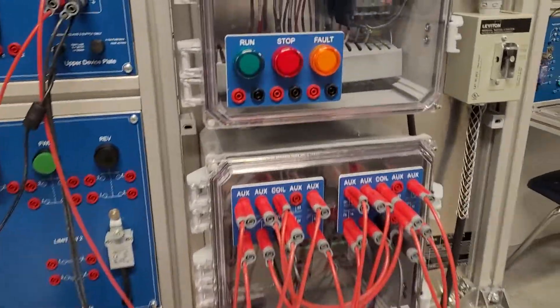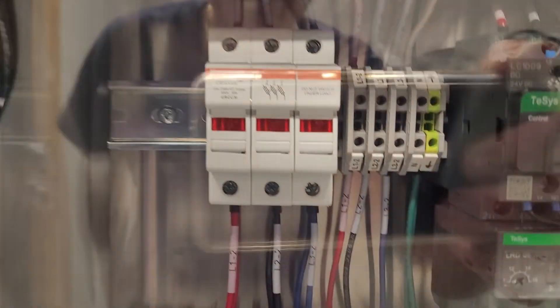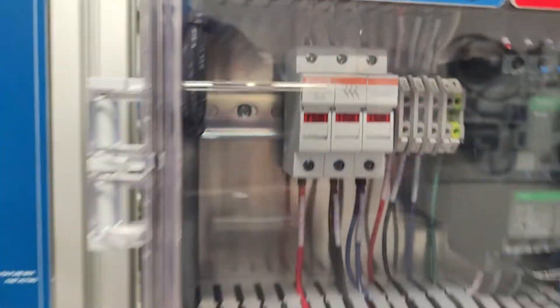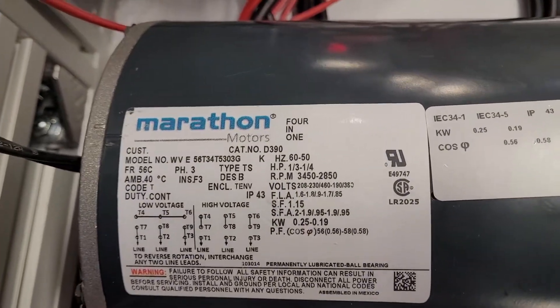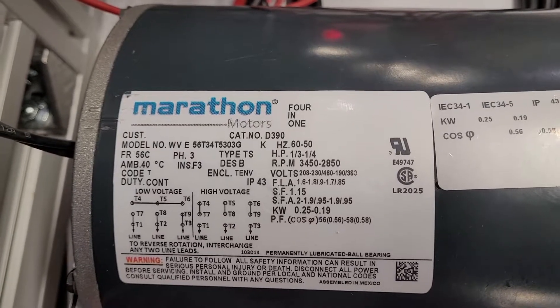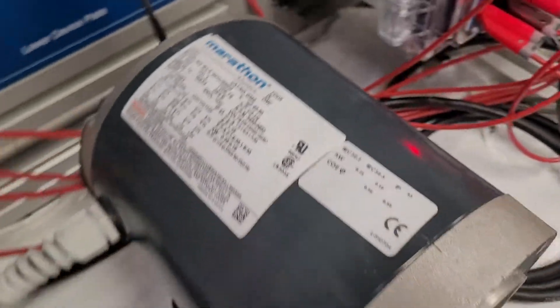I'm going to test 4-amp class CC-ATDR fuses protecting a Marathon Electric 3600 RPM motor. It's operating at 208 volts.